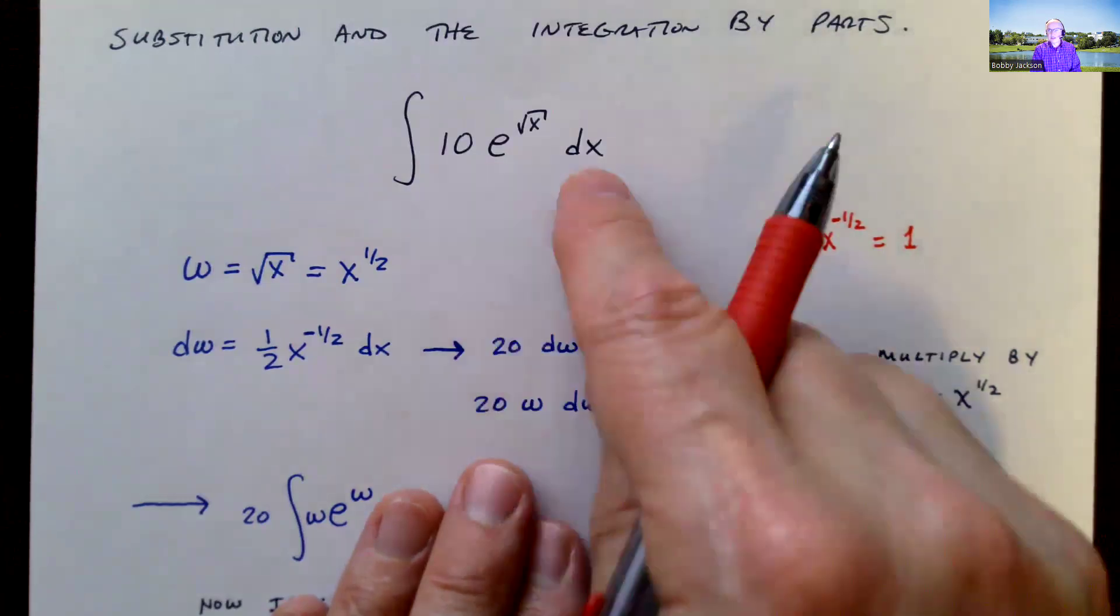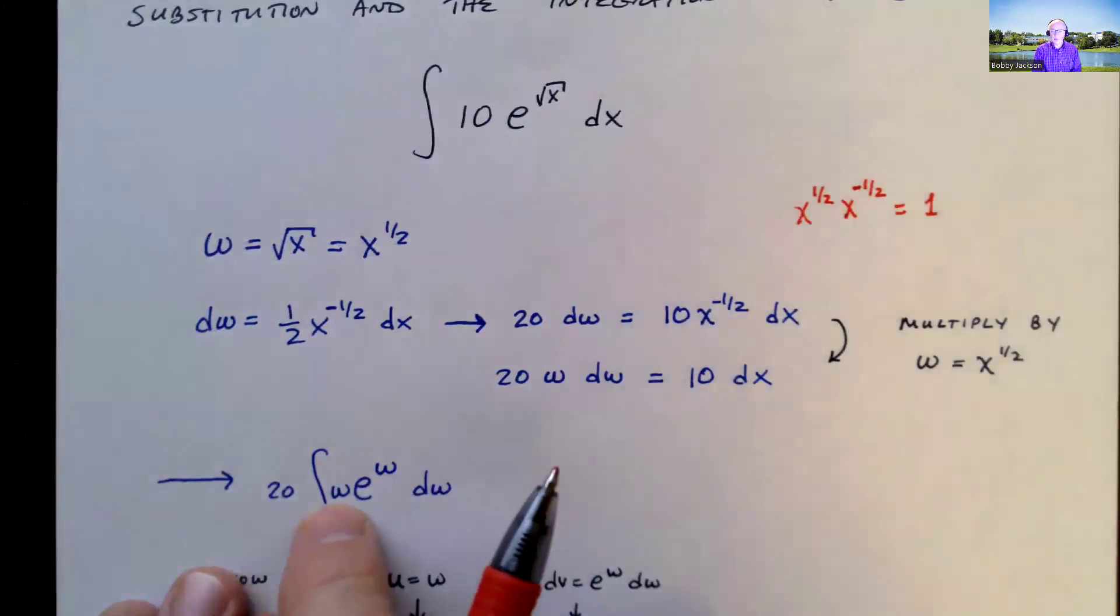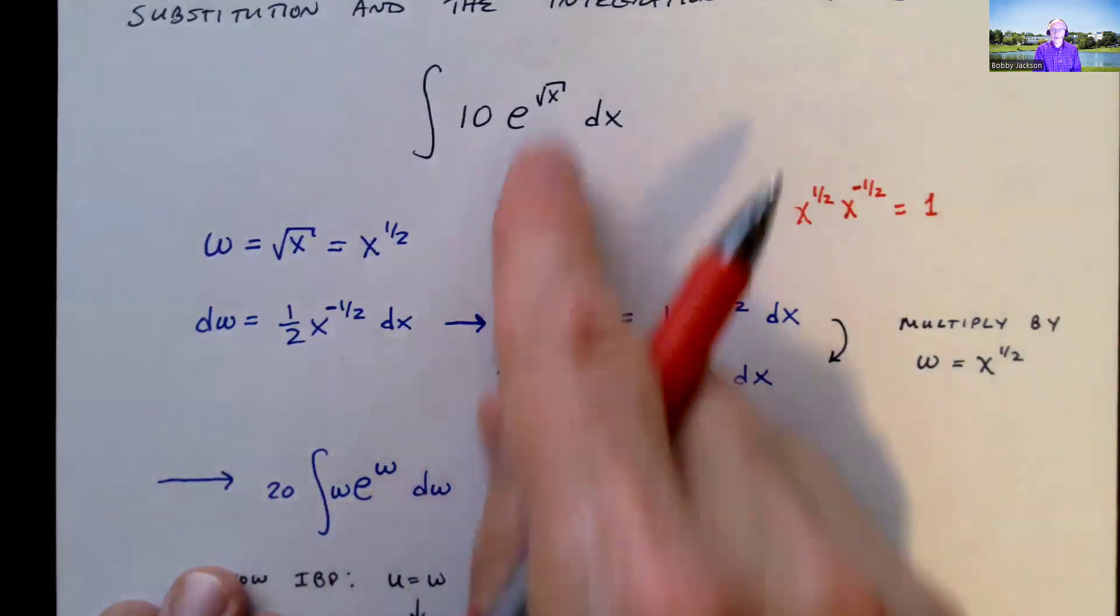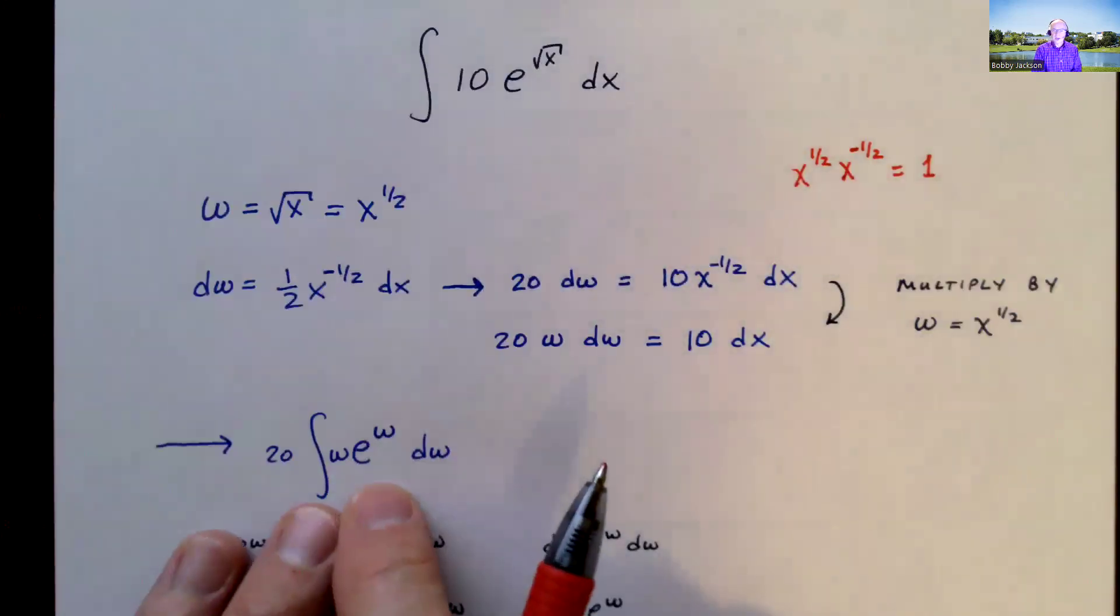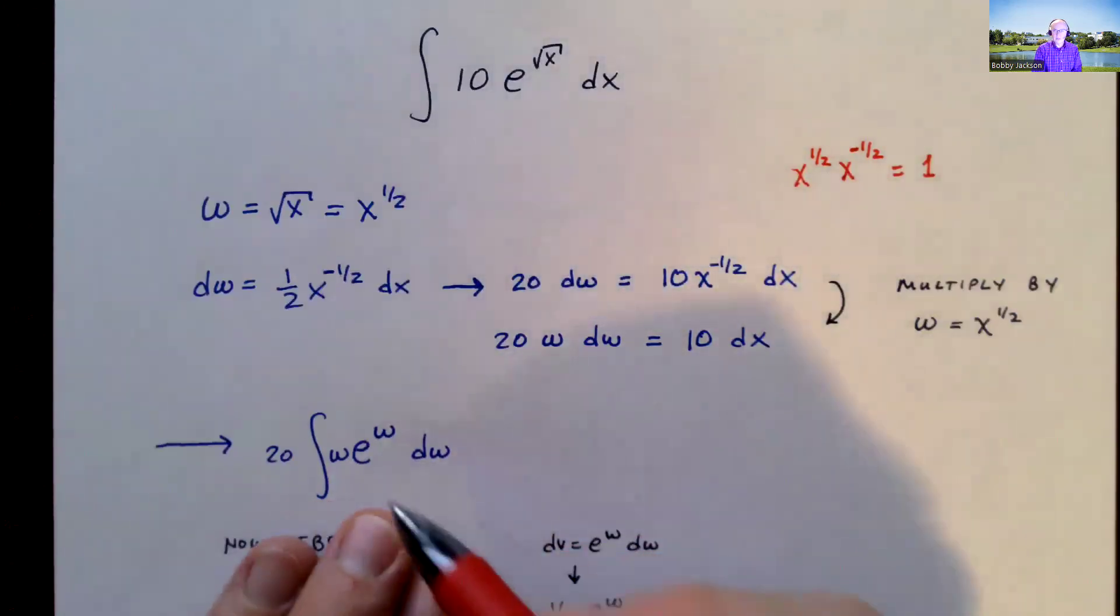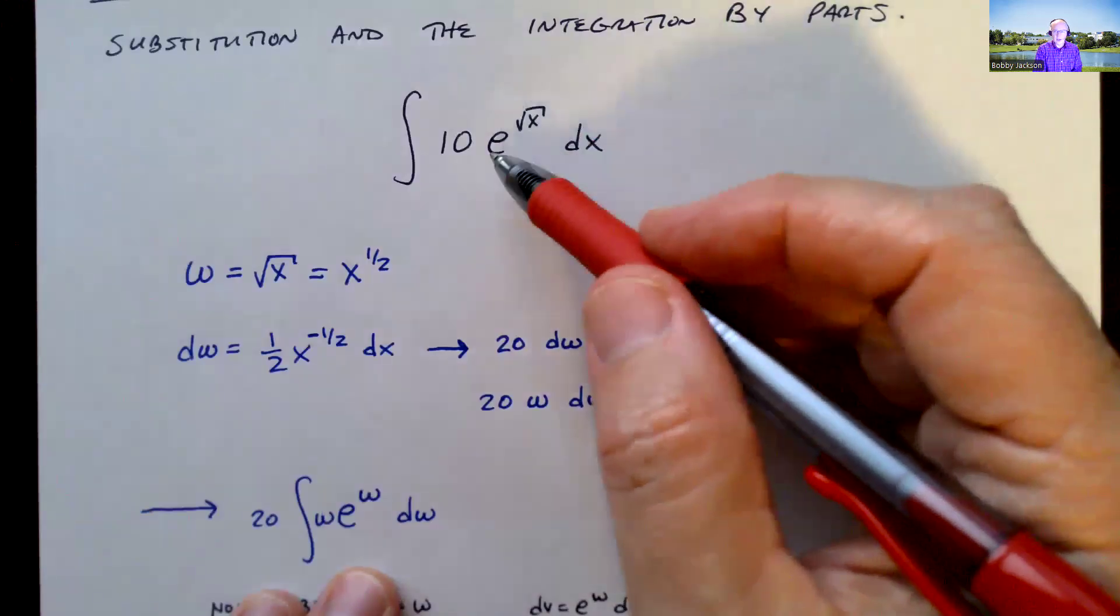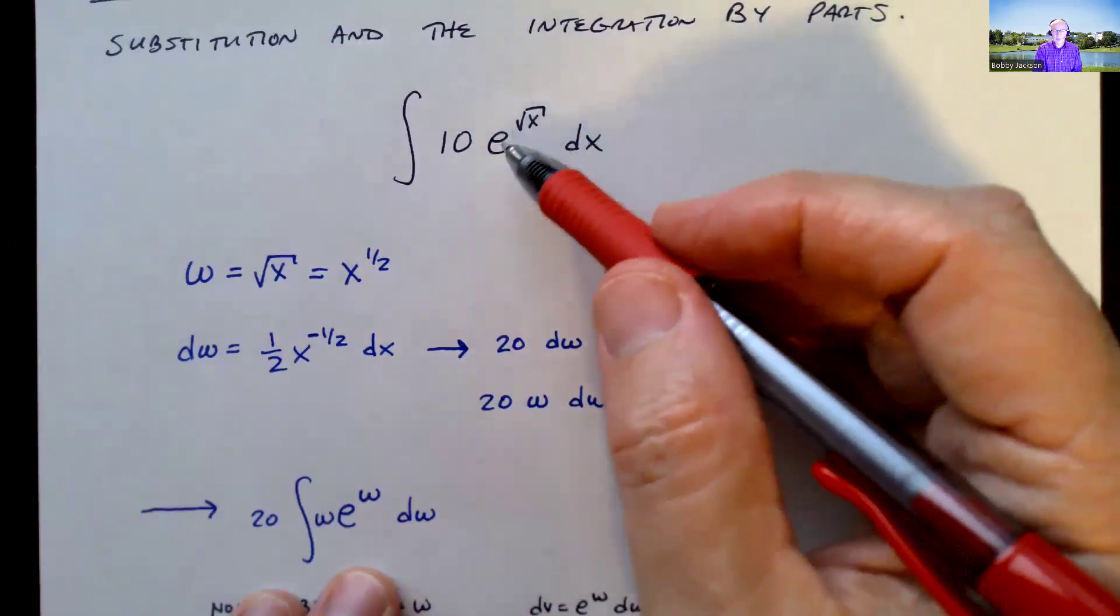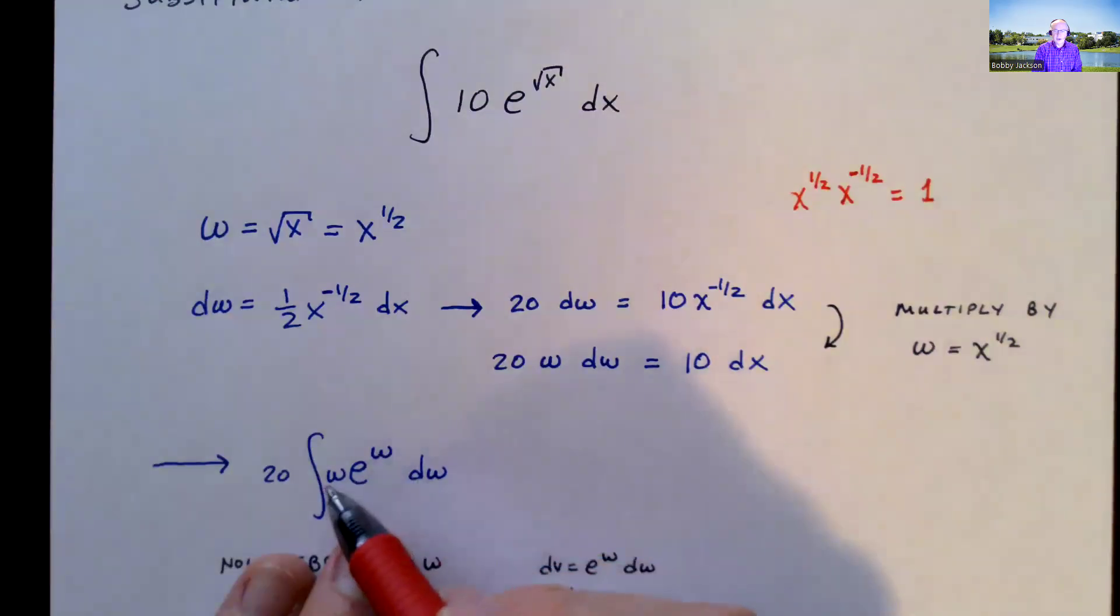I'm going to replace the 10 dx with 20w dw. So I've got 20w dw. And then the e to the square root of x is going to be e to the w. And so I've transformed it. But now notice I've got rid of the problem with the square root of x. That was a problem, e to the square root of x. Now it's just e to the w.